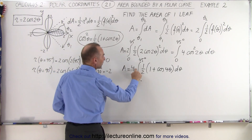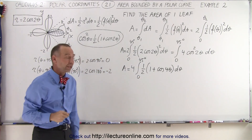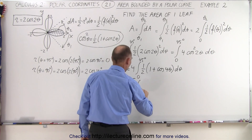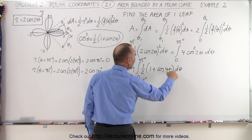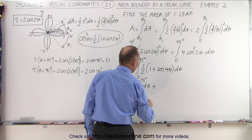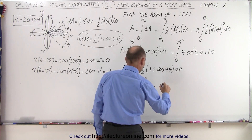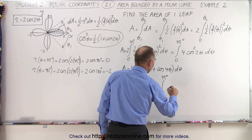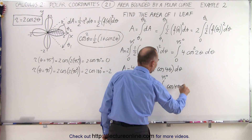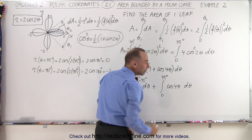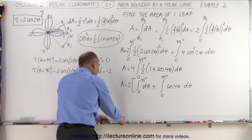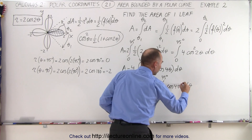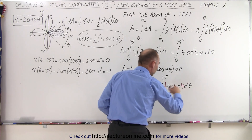The one half can come out and make that a 2, and we can now write this as two separate integrals. So the area is equal to 2 times the first integral from 0 to 45 degrees of d theta, plus the integral from 0 to 45 degrees of the cosine of 4 theta d theta. Since we have 4 theta inside the cosine, we need the proper differential — we need a factor of 4 d theta — so we place a one quarter in front to compensate.